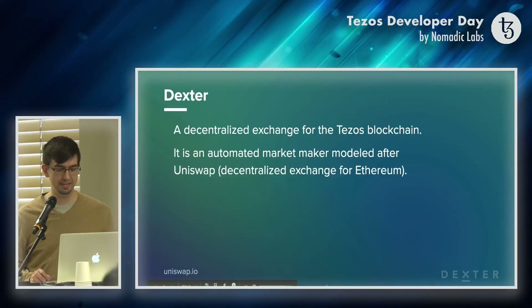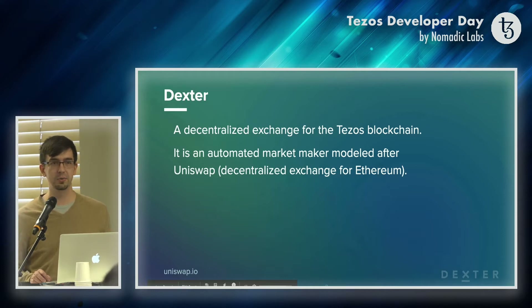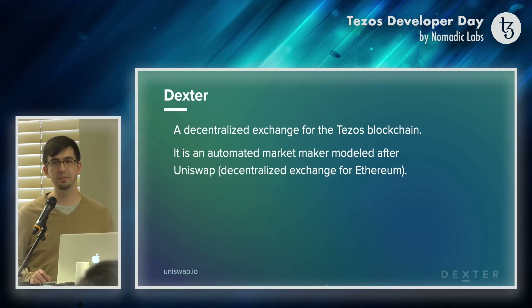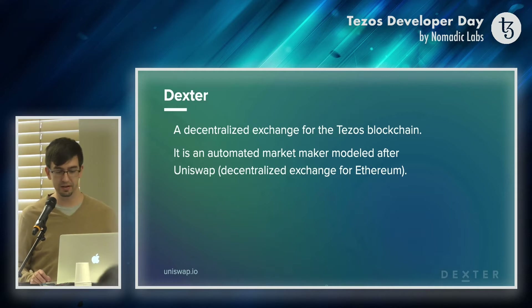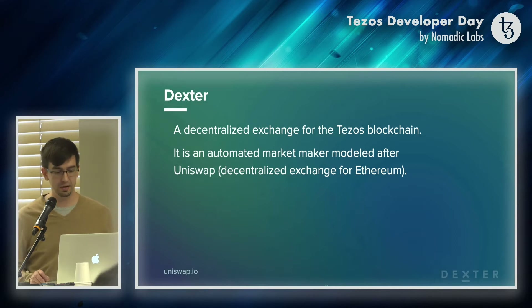So what is Dexter? It's a decentralized exchange for the Tezos blockchain, and what that means is an automated market maker. So let's say you have two commodities and you want to exchange one commodity for the other. What the automated market maker means is that it provides a space to do that and it decides the price of those commodities automatically. This is modeled after Uniswap, a decentralized exchange on Ethereum.